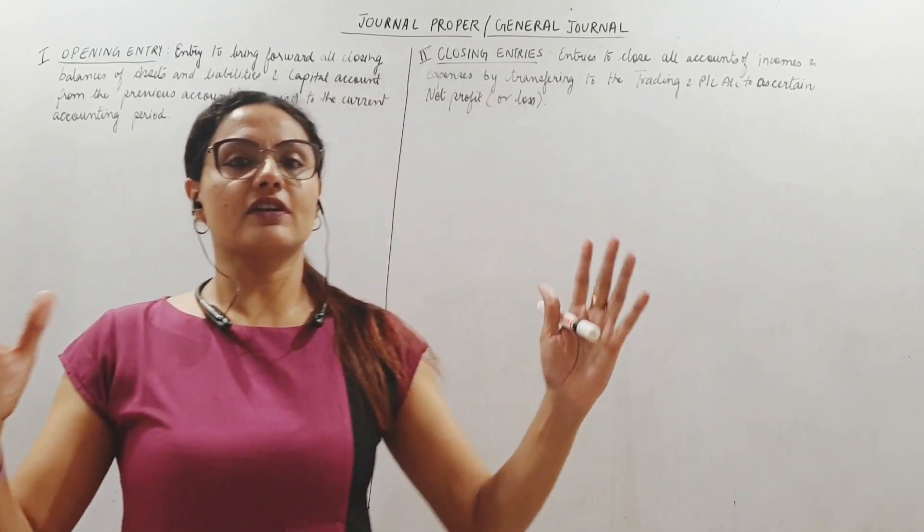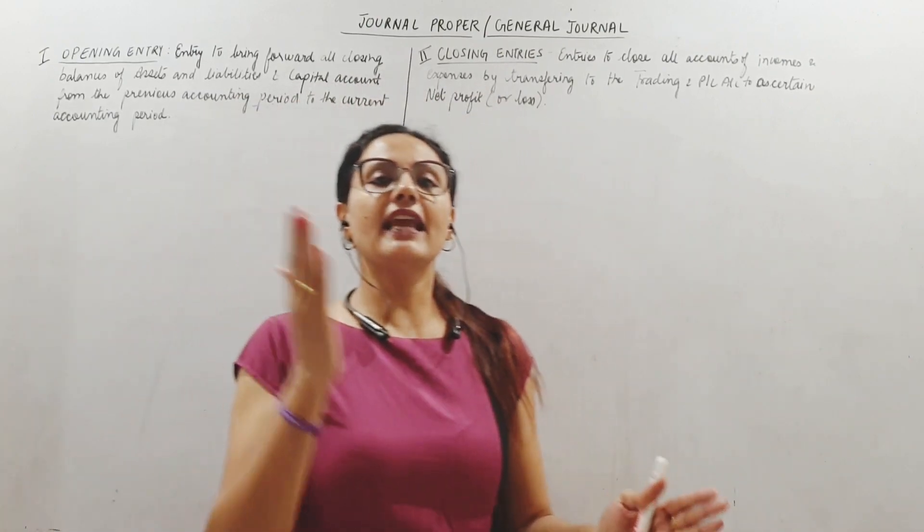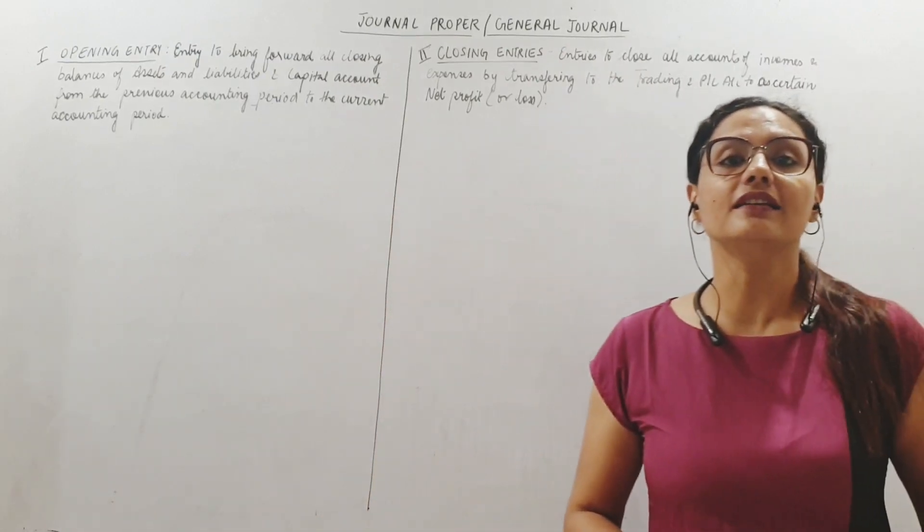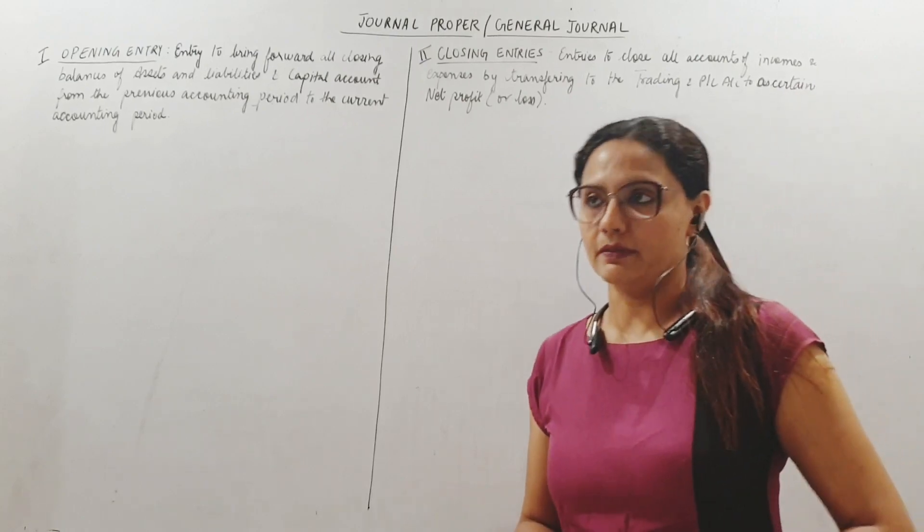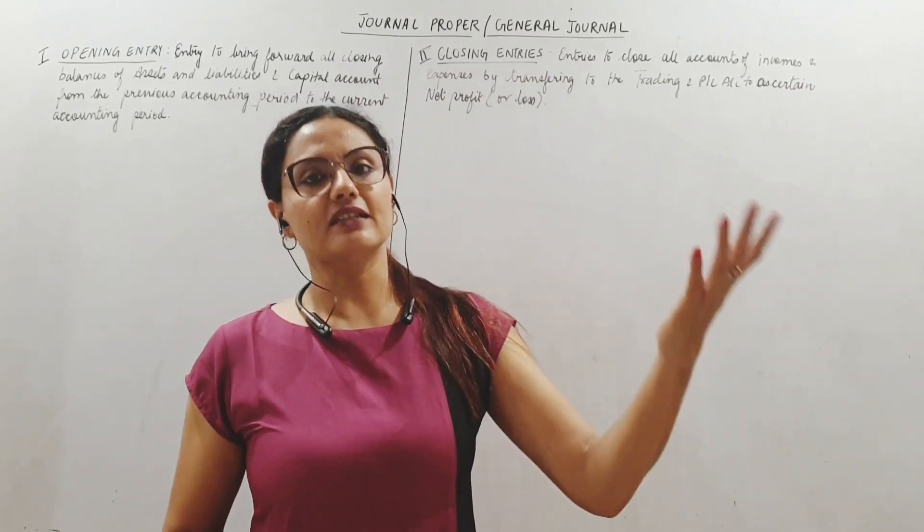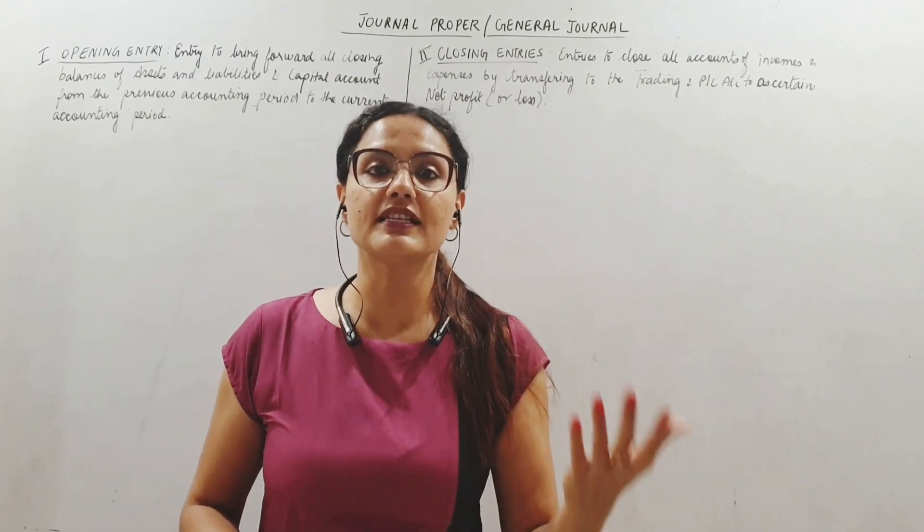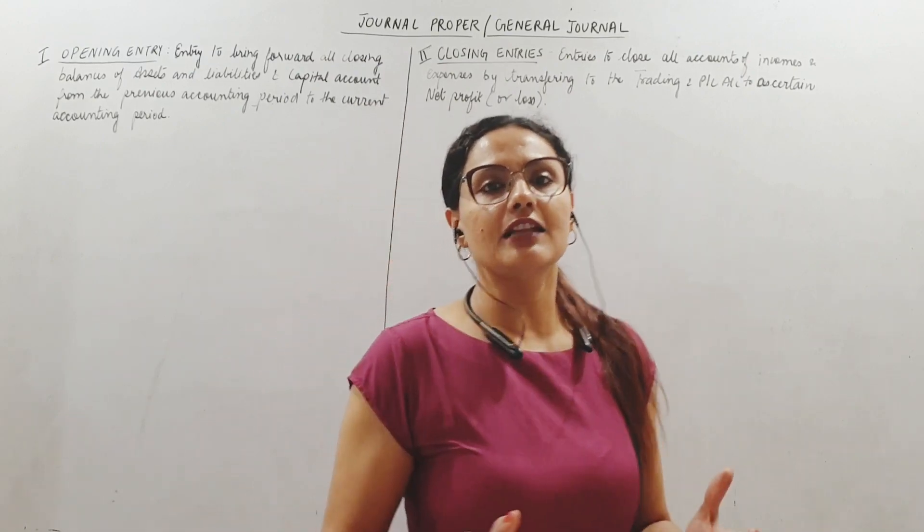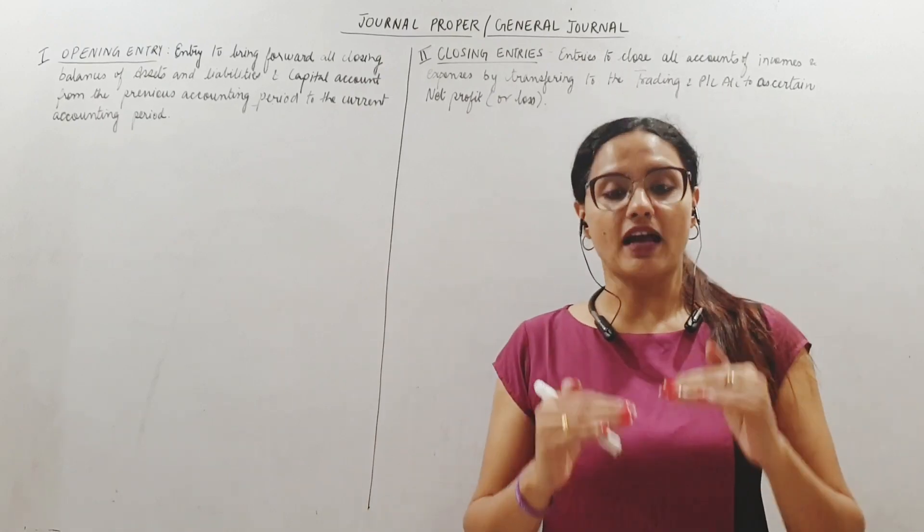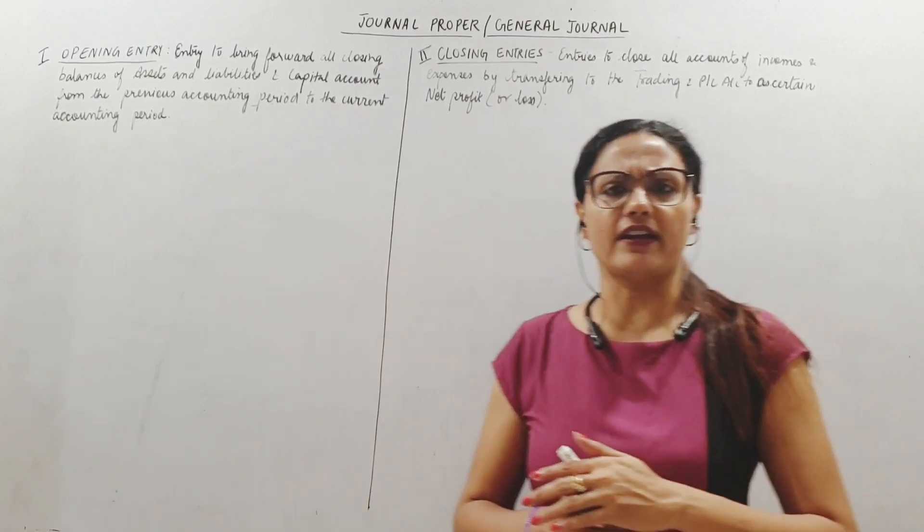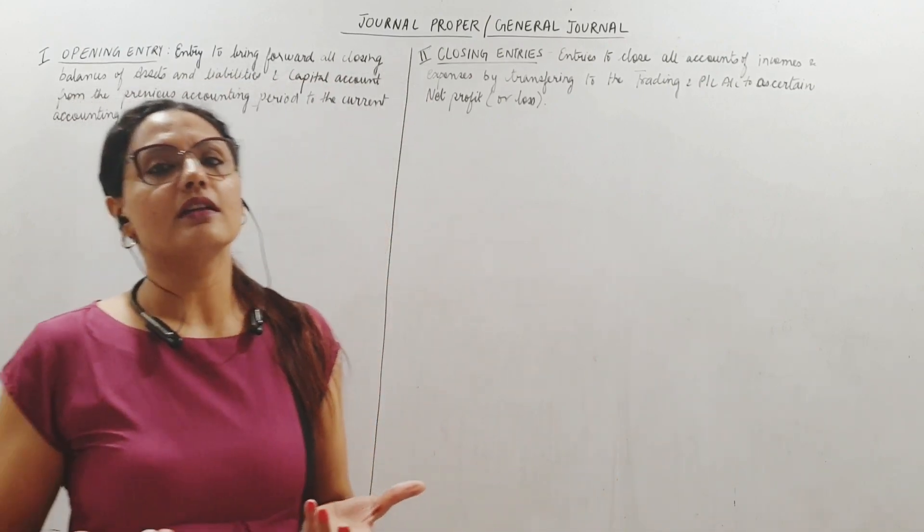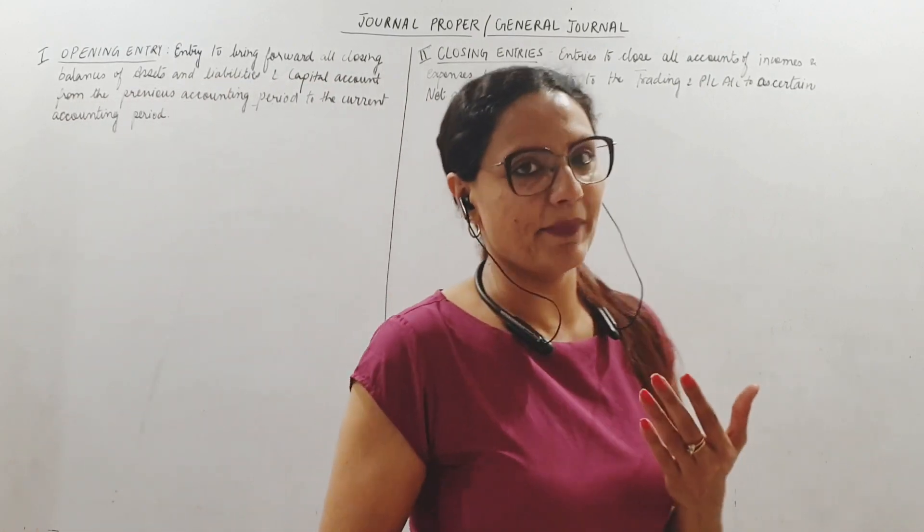That is why this is called the general journal. Before we go on to opening and closing entries, whenever transactions happen we keep passing journal entries for each transaction - for incomes, expenses, assets, liabilities. At the end of the year, which year am I talking about? Accounting year.